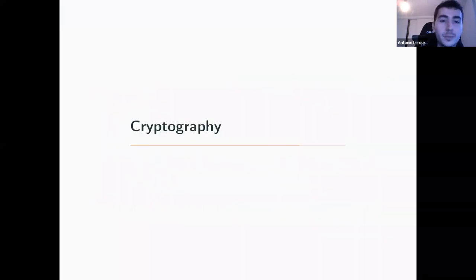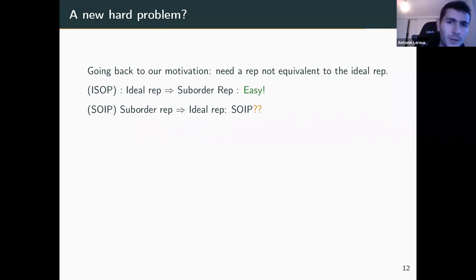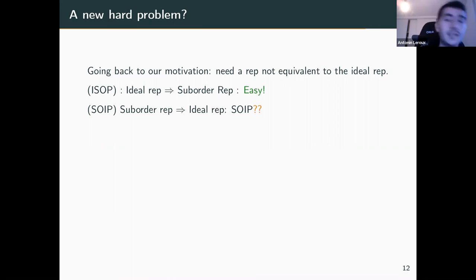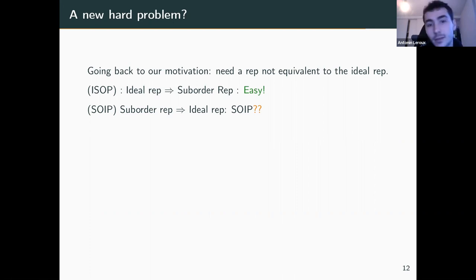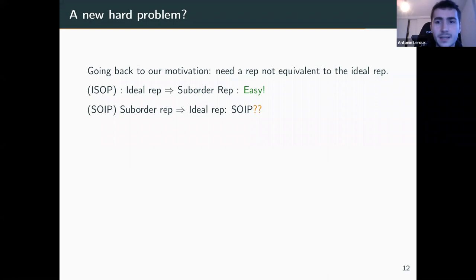Our original motivation was to have something not completely equivalent to the ideal representation. The conversion from ideal representation to suborder representation is easy — otherwise we could not generate one. What is important is that the reverse problem — computing the ideal representation from the suborder representation, which I call the SOIP (suborder to ideal problem) — is hard. It is not completely clear due to recent attacks, but at least for now this problem is not completely broken.